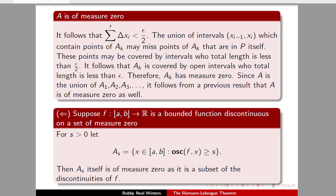For S greater than zero, let A sub S be equal to the set of x in the closed interval [a, b] whose oscillation at x is greater than or equal to S. Now A sub S is of measure zero, as it is a subset of the set of discontinuities of f. Let's take that and put a pin in it.